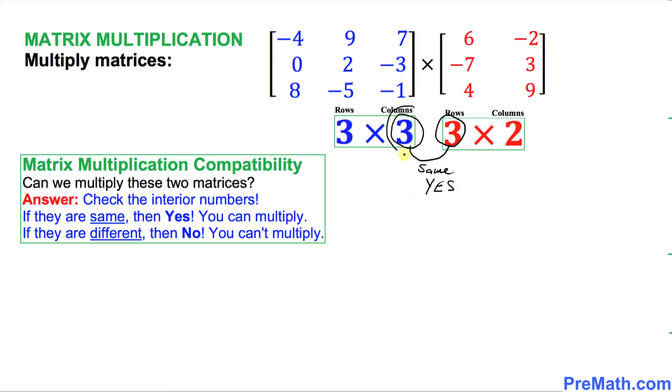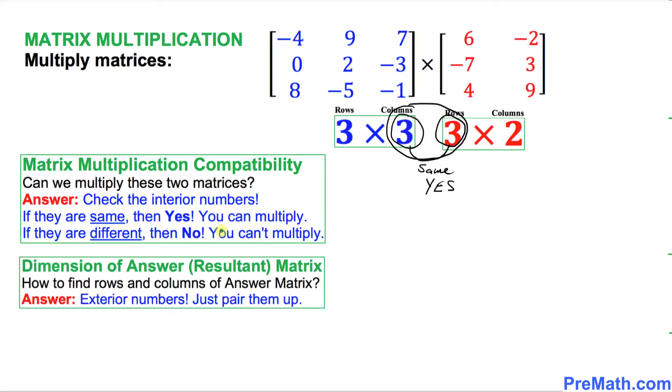If these numbers are different, then you can't. And finally, we're going to check the dimension of our answer matrix. What is that going to be? To check that, look at the outside, the exterior numbers, 3 and 2. So these two, you just pair them up.